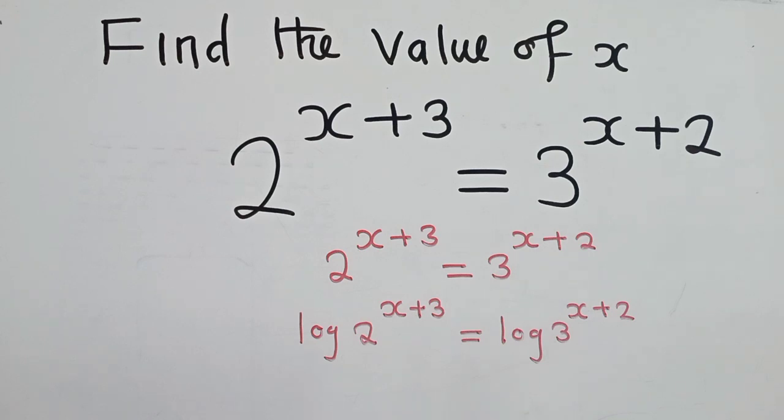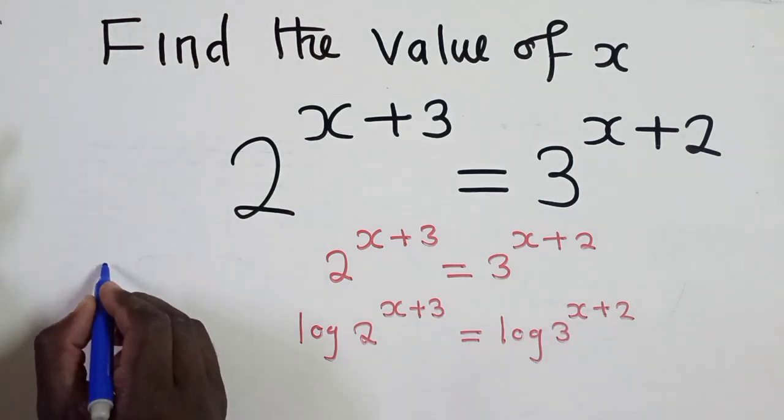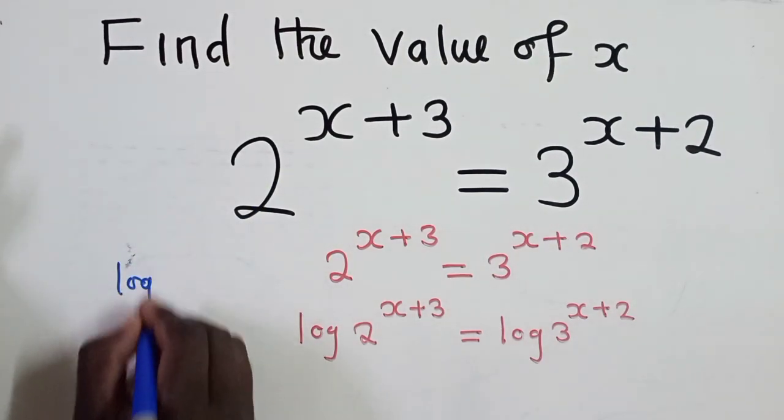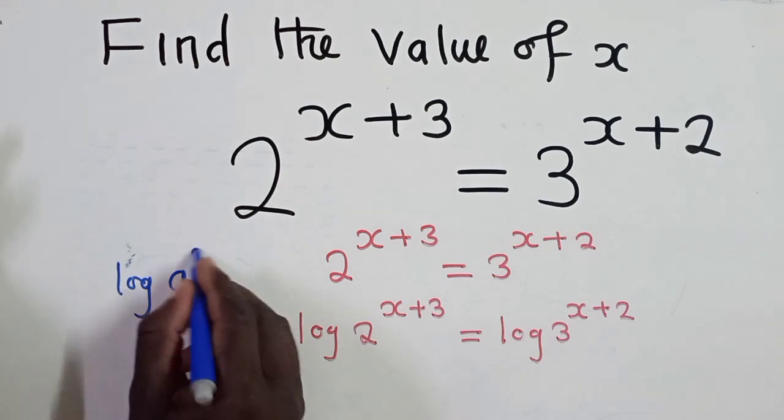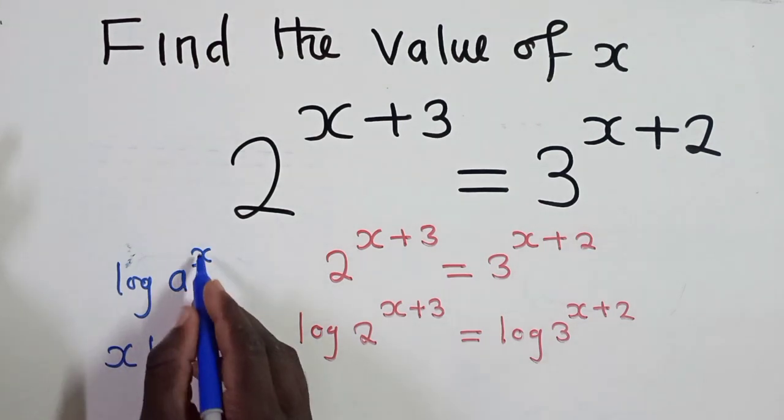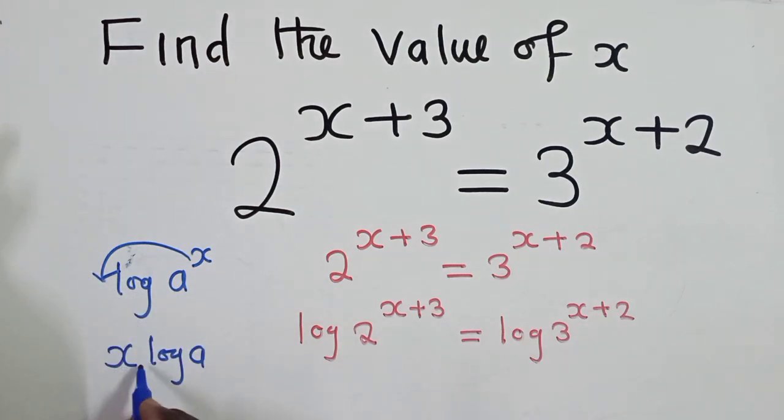So we're going to say log 2 power x plus 3 is equal to log 3 power x plus 2. So after applying the logs, this log will bring this power in front, even here in front. So what you need to know is that when you've got log a power x, this will be equal to x log a. So this power will come this side and this is what we have. So let's do that step.